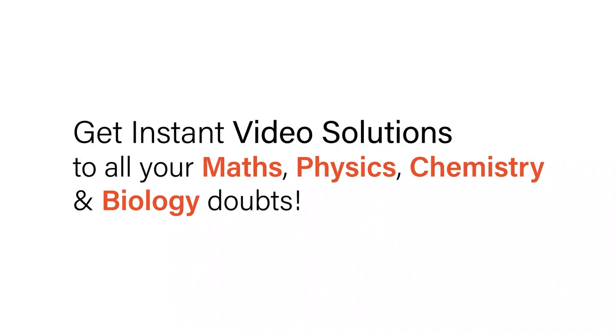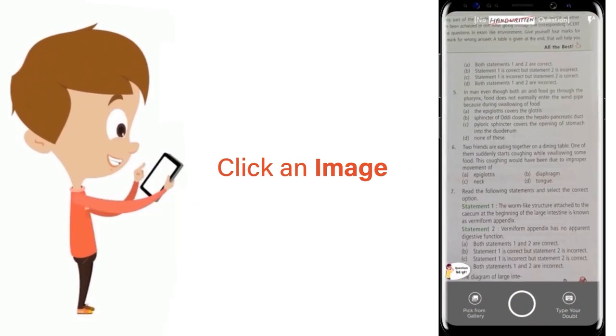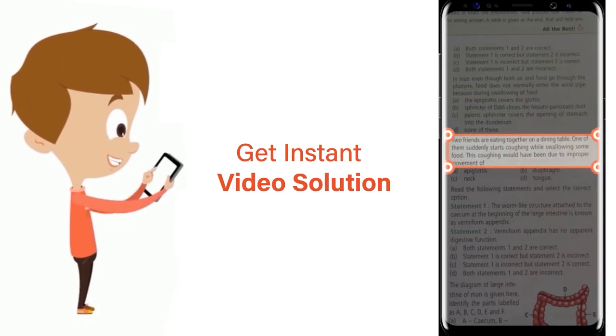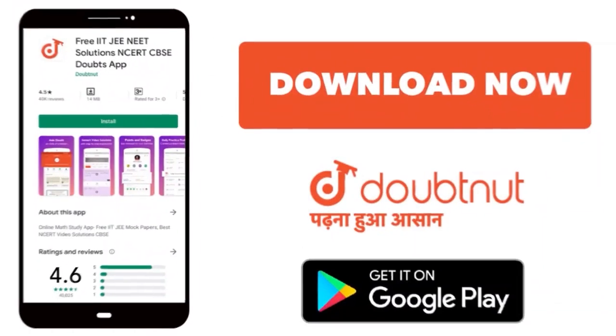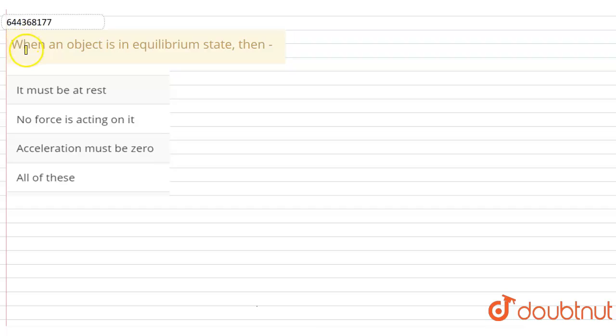With Doubtnut, get instant video solutions to all your maths, physics, chemistry and biology doubts. Just click the image of the question, crop the question and get instant video solution. Download Doubtnut app today. Hello students, our question is when an object is in equilibrium state, then...